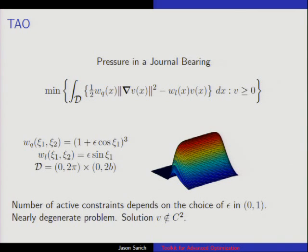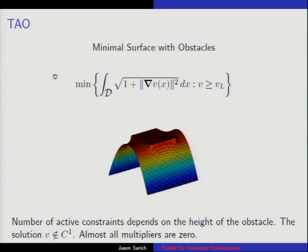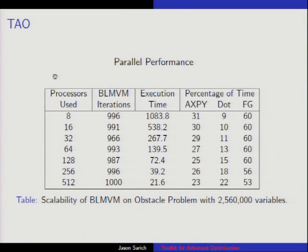These are just some examples — PETSc has examples in their directories, and we have examples in ours. These show some of the problems we can solve. There's also a bound example where we artificially constrain everything to be bigger than a given lower bound. Some performance information: we can solve bigger problems now, and this gives an idea of how well it scales.